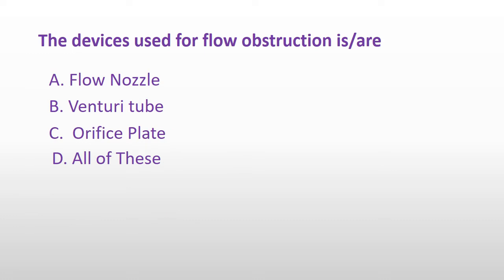The devices used for flow obstruction are: Option A: Flow nozzle. Option B: Venturi tubes. Option C: Orifice plate. Or Option D: All of these. And the answer is Option D: All of these.